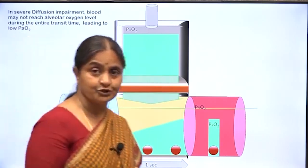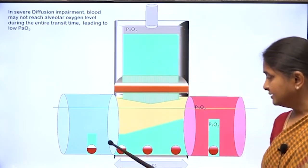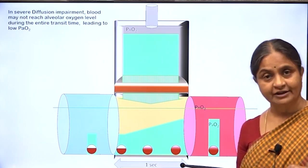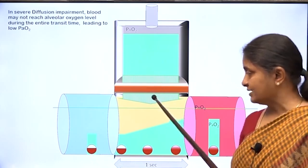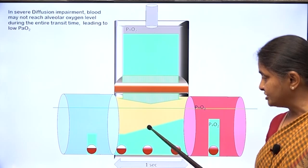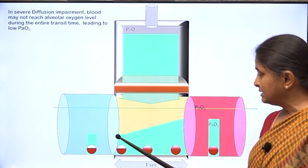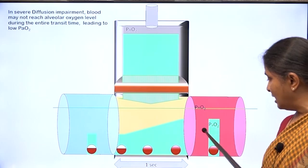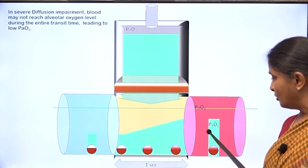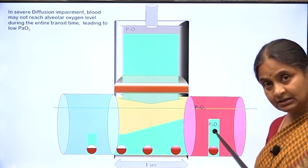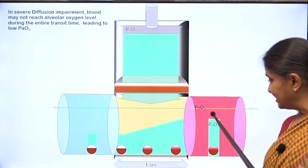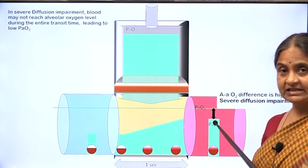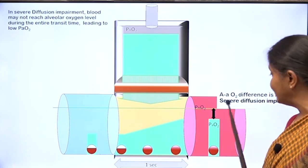In severe diffusion impairment, even with the full one-second dwell time at a heart rate of 60 per minute, the diffusion impairment is so severe that capillary oxygen does not build up to alveolar oxygen levels before blood moves out of the pulmonary capillary. Arterial PO2 is significantly lower than normal and the alveolar-arterial oxygen difference is increased, indicating severe diffusion impairment.